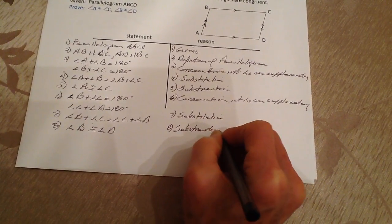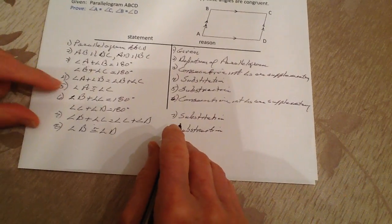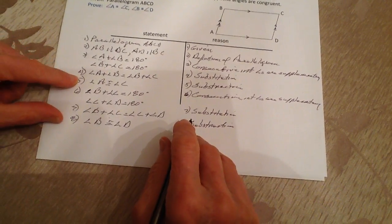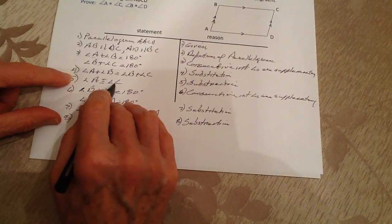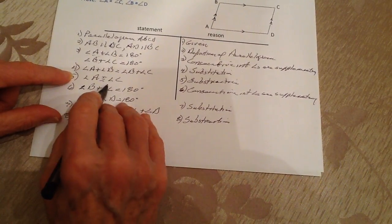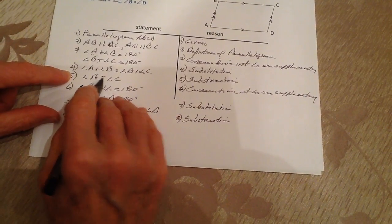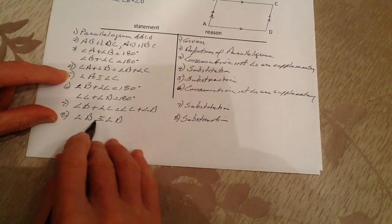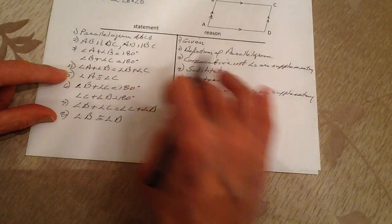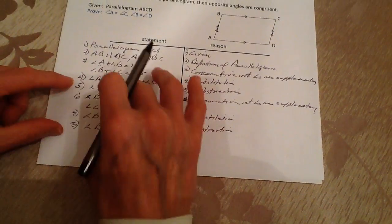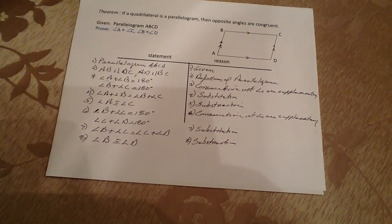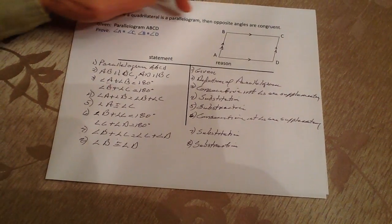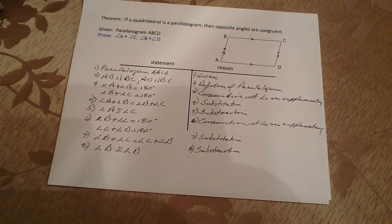Now, I could have added a step, both at statement five and statement eight, where I said that angle A was equal to angle C, and then by the definition of congruency, make them congruent. I could have done the same for B and D, but I decided to skip those steps since they're pretty self-evident. Therefore, we've proven: if a quadrilateral is a parallelogram, then the opposite angles are congruent.